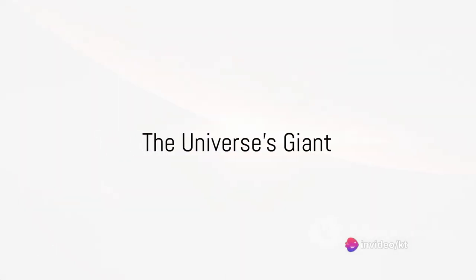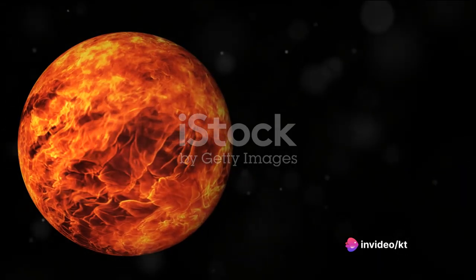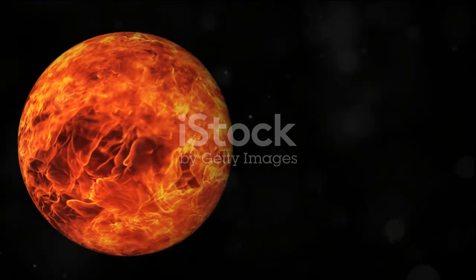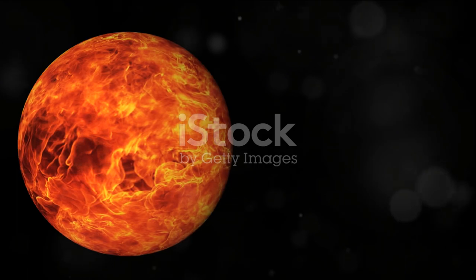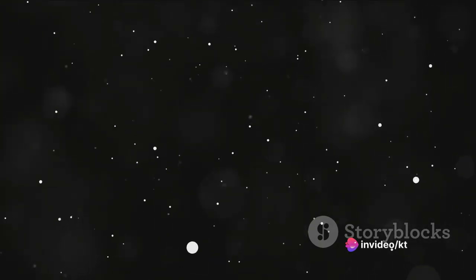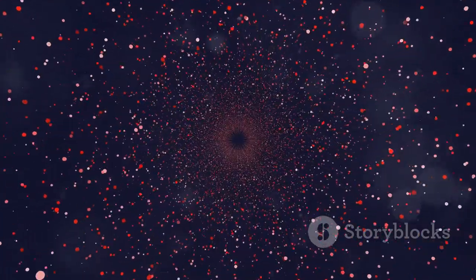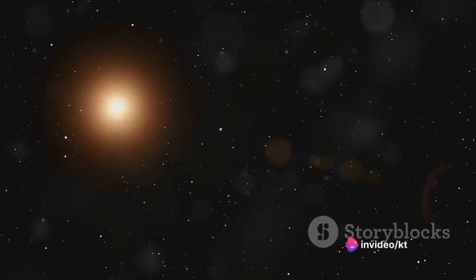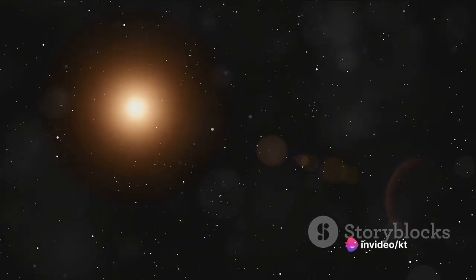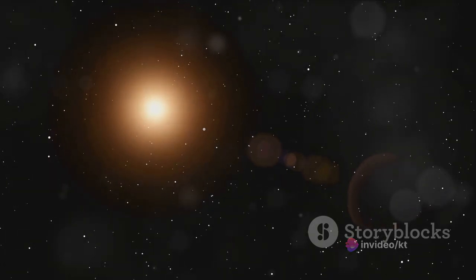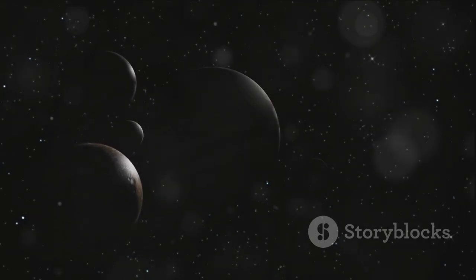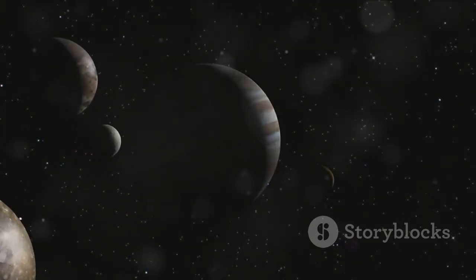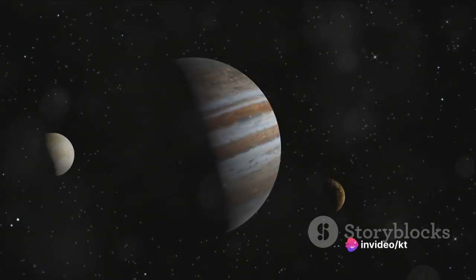UY Scuti, a red supergiant star, is the reigning champion in the category of size. It's a fascinating celestial body, a giant among stars. Situated in the Scutum constellation, about 9,500 light-years away from our home planet, UY Scuti is a sight to behold. It's not just another star in the vast universe, but it's the most voluminous one we've discovered so far. If you were to replace our sun with UY Scuti, its surface would extend beyond the orbit of Jupiter. This star is so massive that it could engulf the largest planet in our solar system.